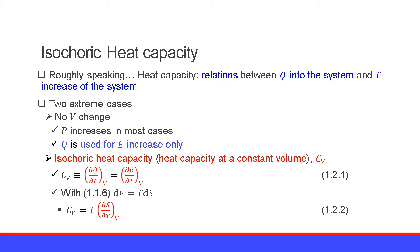There are two extreme cases. The first case is no volume change — in most cases, pressure increases — and the heat Q is used for the internal energy E increase only. The heat capacity in this case is referred to as the isochoric heat capacity, or the heat capacity at constant volume, Cv. Therefore, Cv is defined as the partial derivative of heat Q with respect to temperature T at constant volume V, which equals the partial derivative of internal energy E with respect to T at constant volume V. Equation 1.2.1.